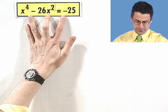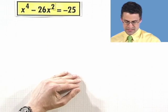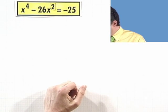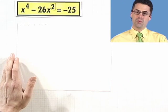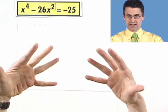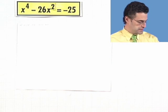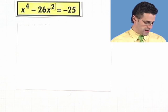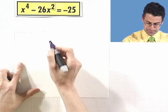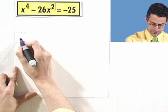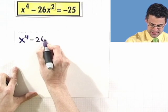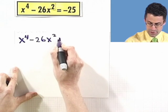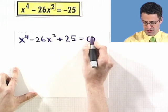Here's one I think you might enjoy: x to the fourth minus 26x squared equals negative 25. The very first thing I do is get everything equal to 0 so I can try to factor. I'll bring everything over to the left-hand side by adding 25 to both sides, and I see: x to the fourth minus 26x squared plus 25 equals 0.